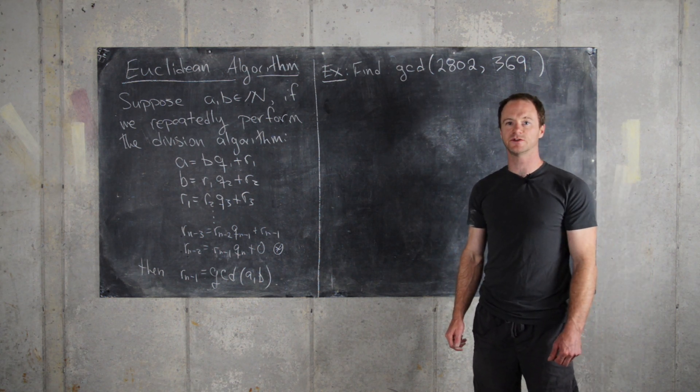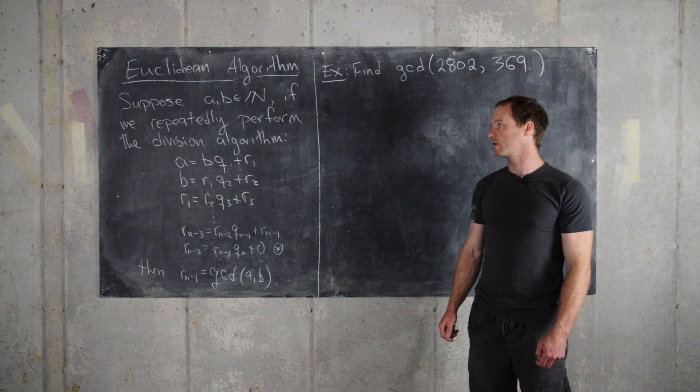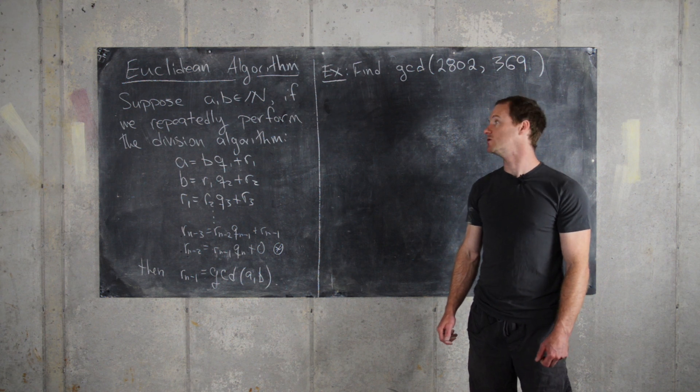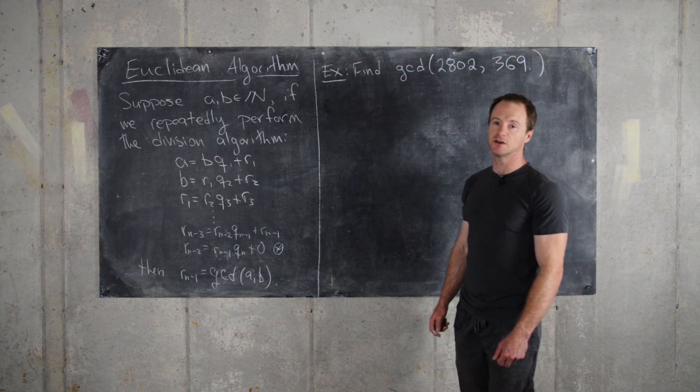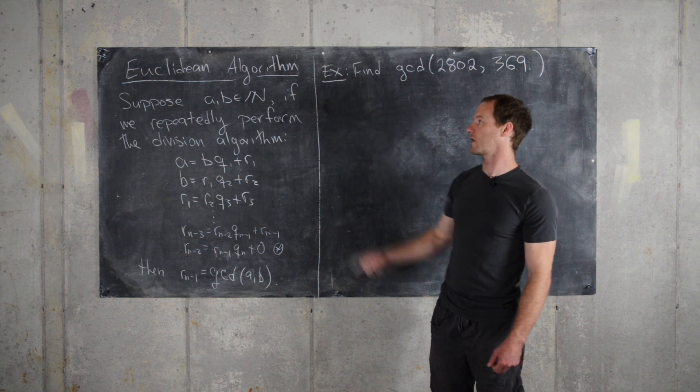Okay, here's an example of using the Euclidean algorithm to determine the GCD of two given natural numbers. So let's look over the Euclidean algorithm carefully.